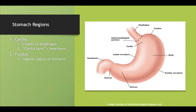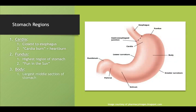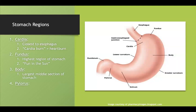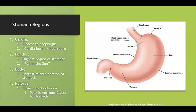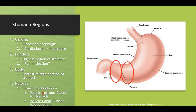The fundus is the highest region of the stomach — I remember that by thinking 'fun in the sun.' The body is the largest middle portion of the stomach. The pylorus is the region closest to the duodenum, and it can be subdivided into two sections: the pyloric antrum, closest to the stomach, and the pyloric canal, closest to the duodenum. I remember the difference by thinking of the A in antrum as the first letter of the alphabet — so it's the first thing food encounters between these two regions.